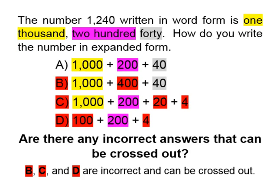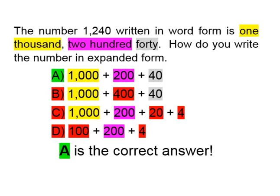Based on that information we know we can cross out answer choices B, C, and D, because those three answer choices have something that does not match our number. The answer choice we have left is A. Do you see how taking a moment to cross out the wrong answers before you start solving increases your chance of getting the problem right? A is our correct answer. One thousand is in yellow — check. Two hundred is in pink — check. Forty is in gray — check. So A is our correct answer.